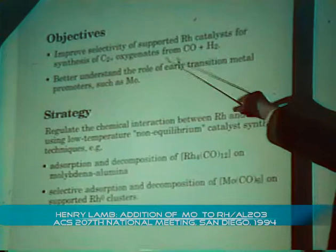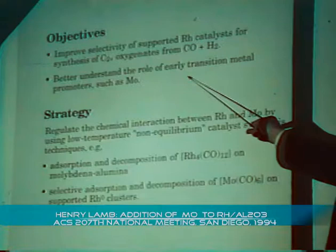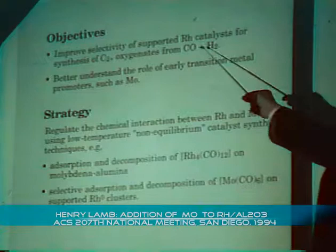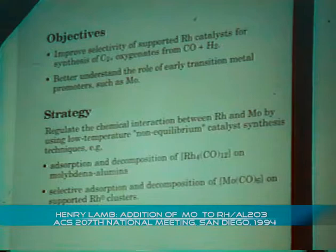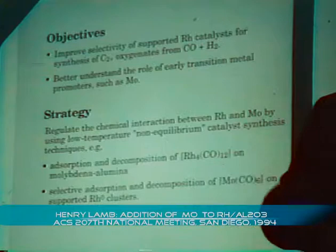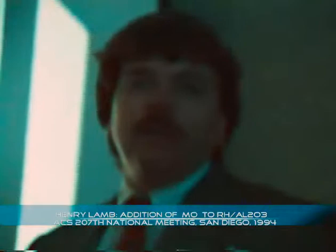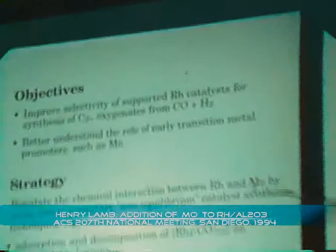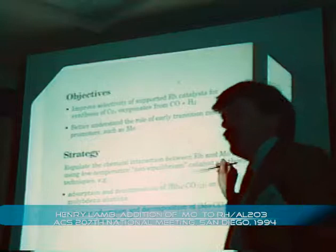Our objectives were to try to improve the selectivity of rhodium catalysts for CO hydrogenation, particularly with C2-plus compounds, and to better understand the role of early transition metal promoters such as molybdenum in accomplishing an increase in activity as well as an increase in selectivity to C2-plus compounds. We know that addition of molybdenum to rhodium on alumina catalysts has been reported to increase activity and selectivity to oxygenates, but there has been speculation as to what the structure might be — whether the interfacial contact between rhodium and molybdenum oxide is important.